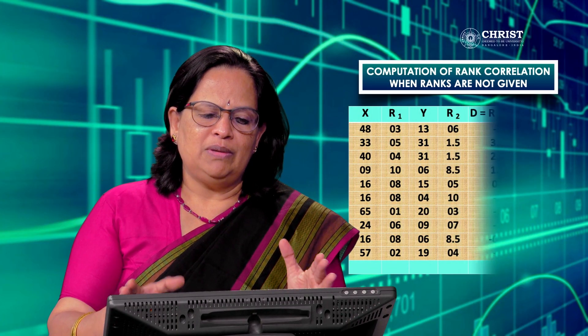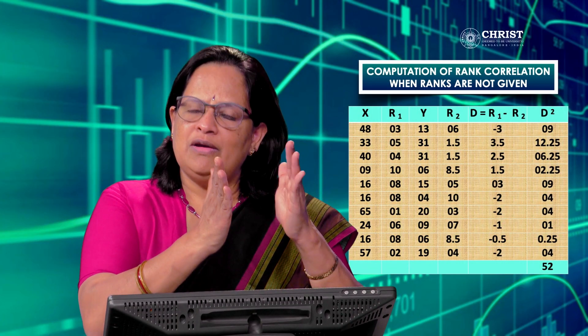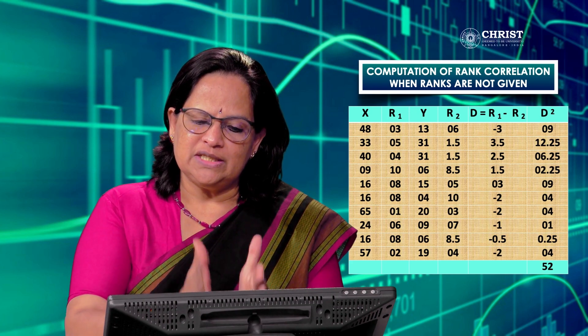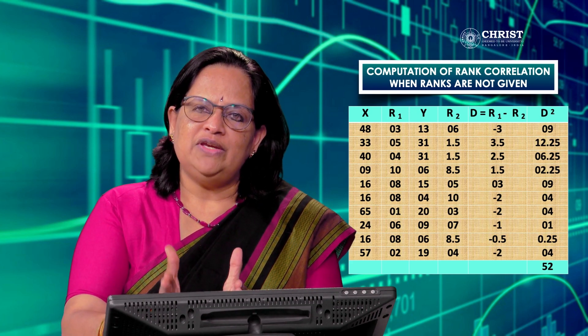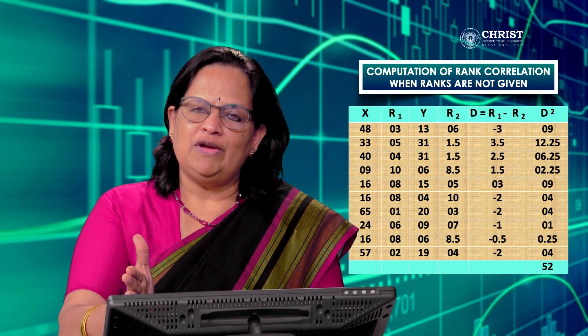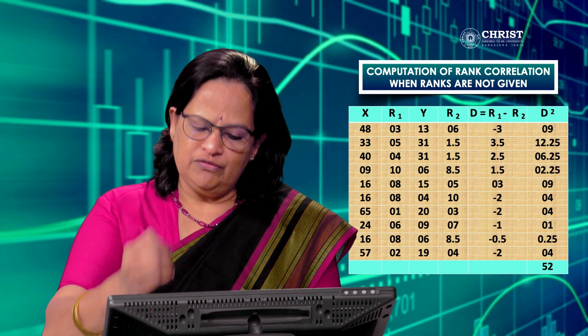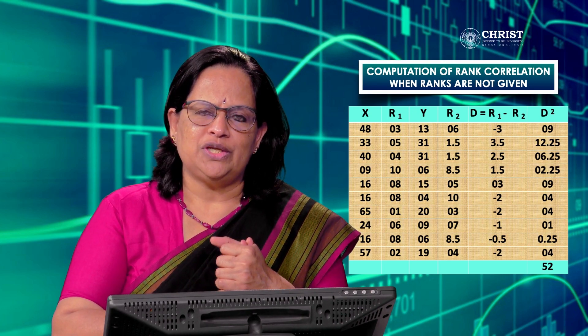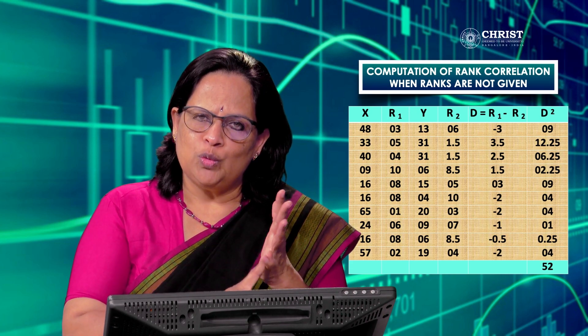Now, x series ranks are written as R1 and y series ranks as R2. We take the deviations R1 minus R2. The d² values are computed and the total is 52. Now to compute the rank correlation coefficient, three correction factors are used: one for x series and two for y series.